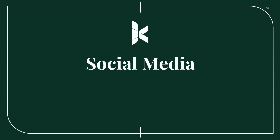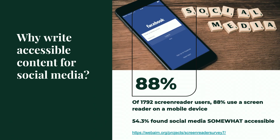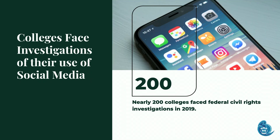I have a few extra minutes, so let's talk about social media — that's how younger consumers are accessing information, and it's a big one for higher ed. A WebAIM study found that 88 percent of screen reader users on mobile found only 54 percent of social media was somewhat accessible — pretty low numbers. A few years ago, 200 colleges faced federal civil rights investigations. If your consumers are using social media, you need to make sure your social media is accessible — it's not just your website anymore.